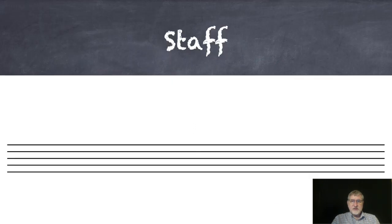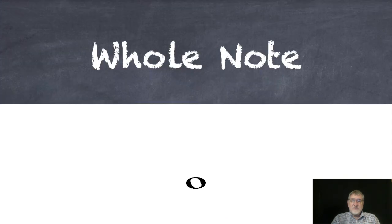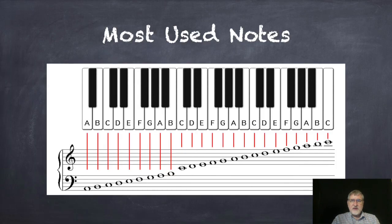The most fundamental is the staff, a set of five lines. Another fundamental symbol is that of a note, which represents a single sound or pitch. Each note of the piano, or any instrument, is indicated by a note in a specific location on a staff.